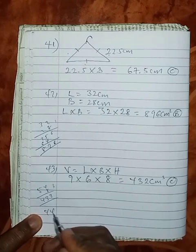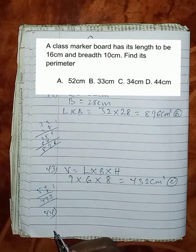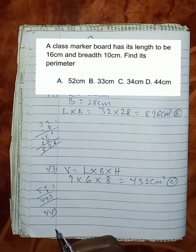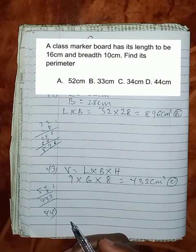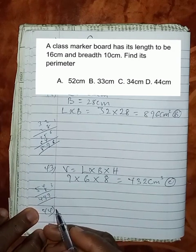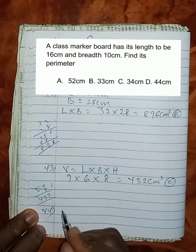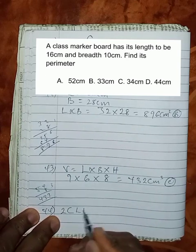Question 44 says, a class marker board has its length to be 60 cm and breadth 10 cm. Find its perimeter. A class marker board must be in the form of a rectangle. We are asked to find the perimeter.